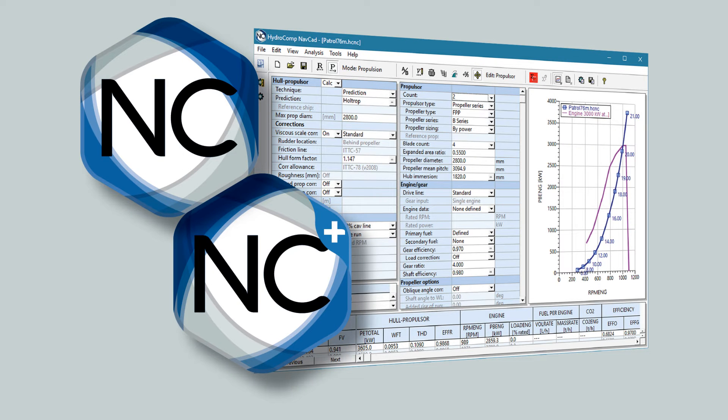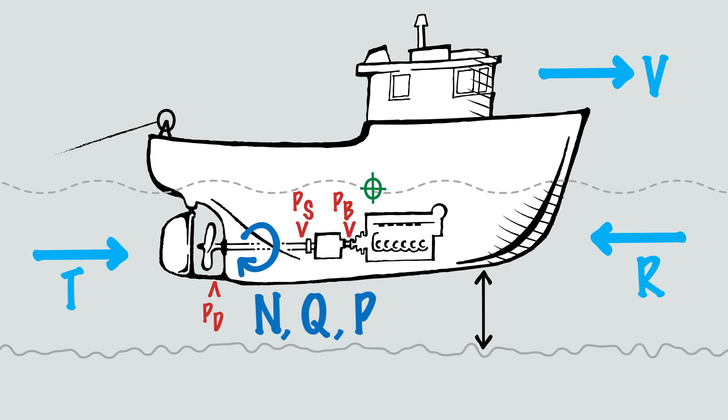NavCat quickly analyzes vessel speed and power performance, providing maritime designers with the necessary tools for the optimized selection of suitable propulsion system components. The software is based around the concept of modeling ships as complete systems instead of a collection of individual components.